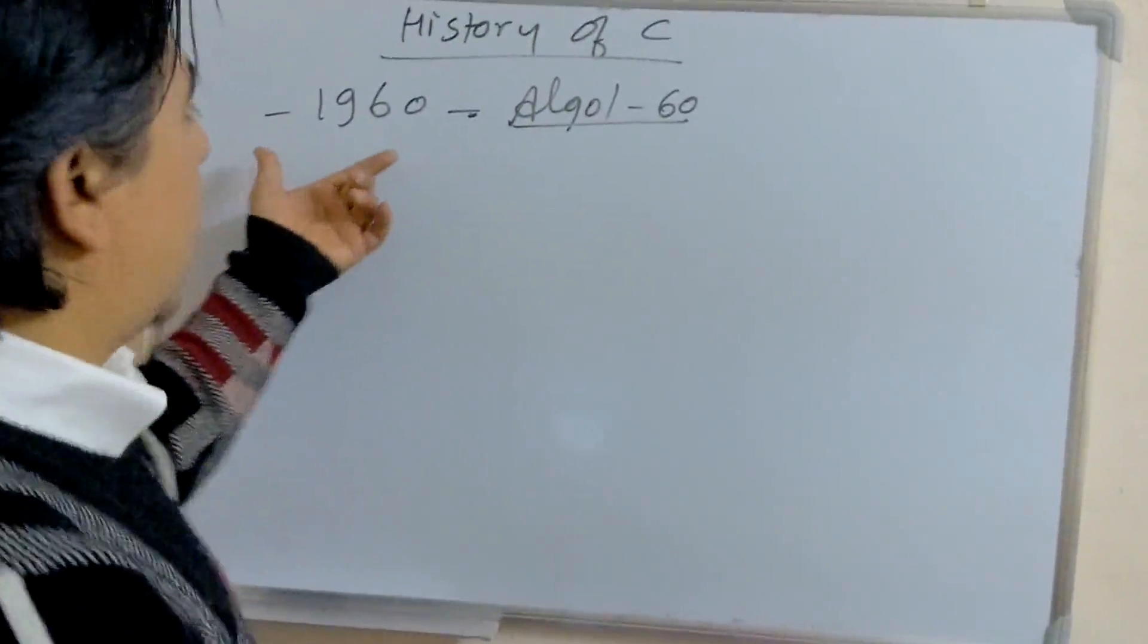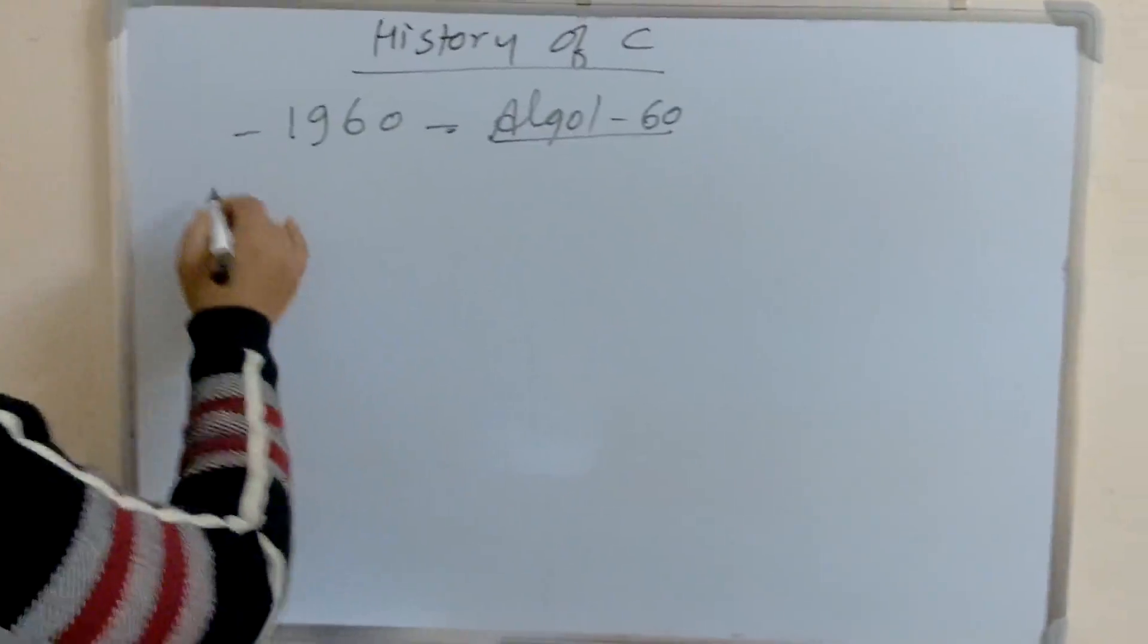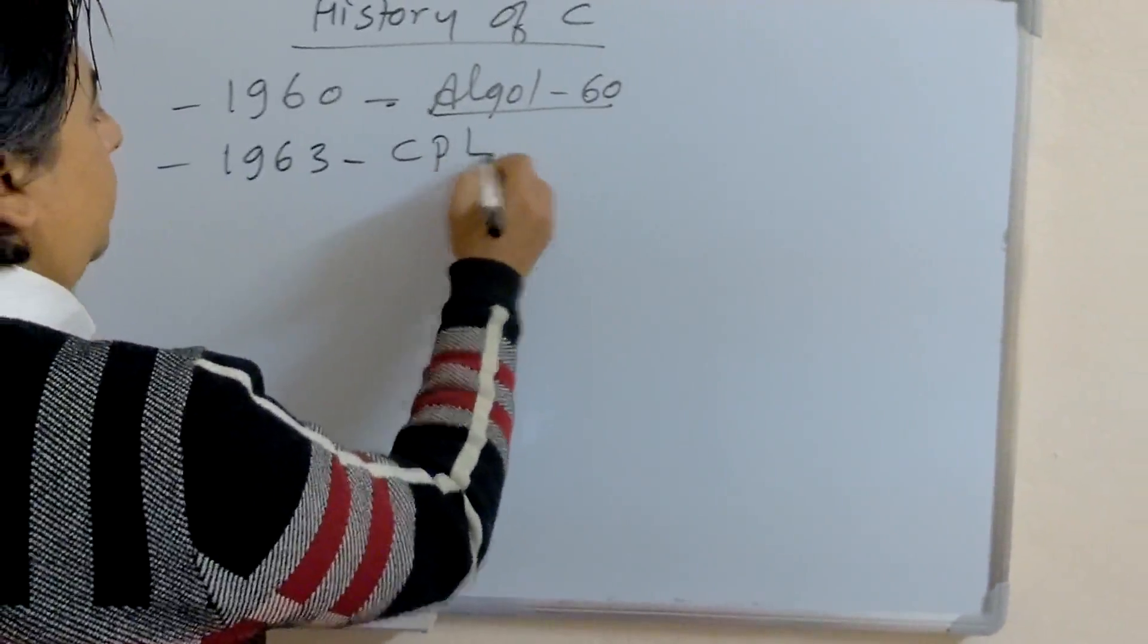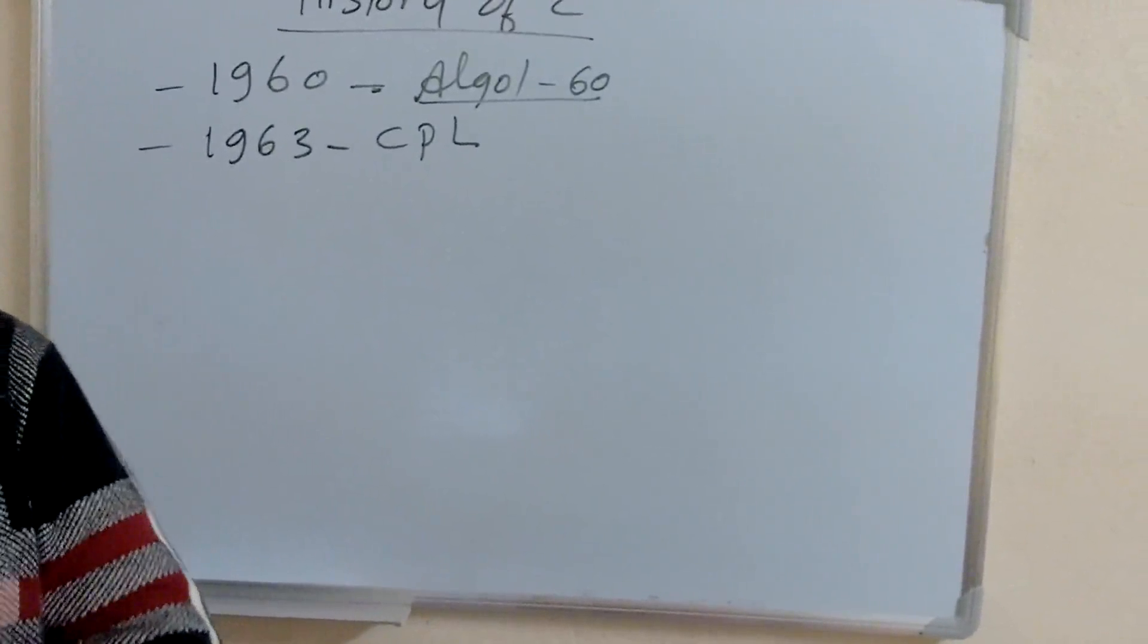So, we start from 1960, Algol-60. After that, in 1963, CPL, Combined Programming Language was developed.